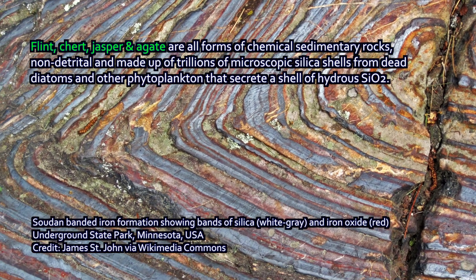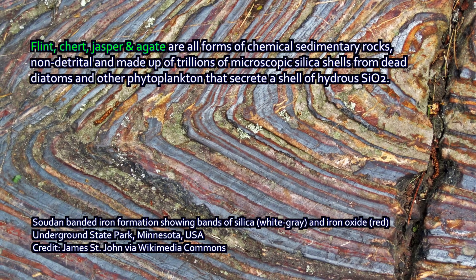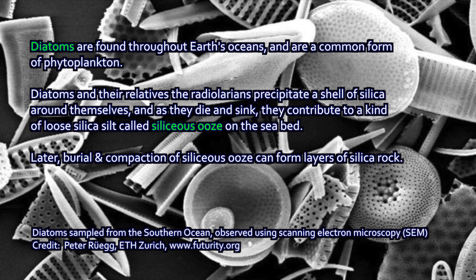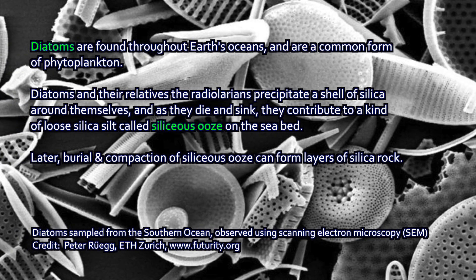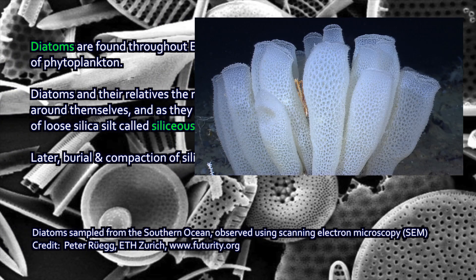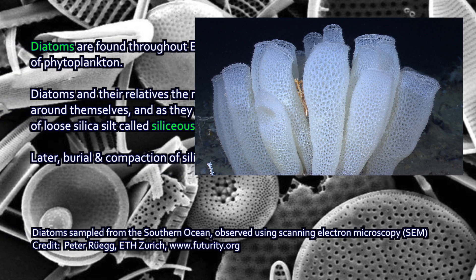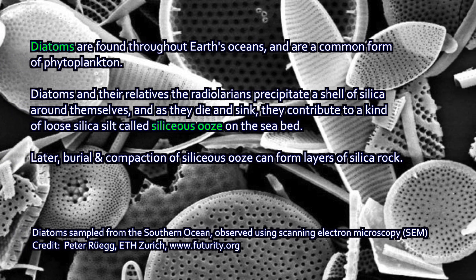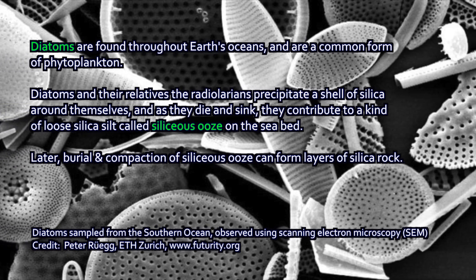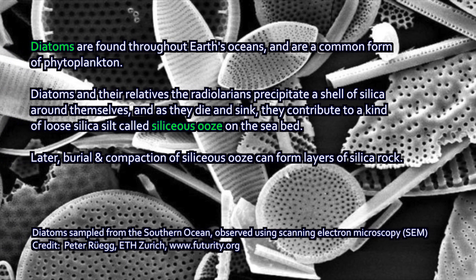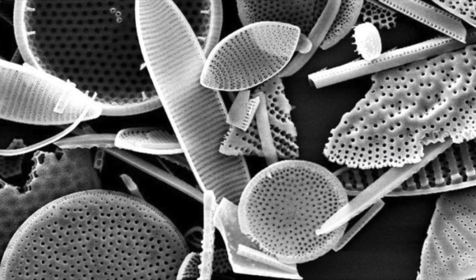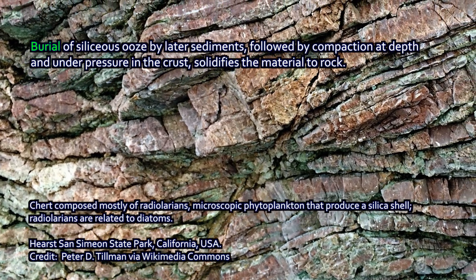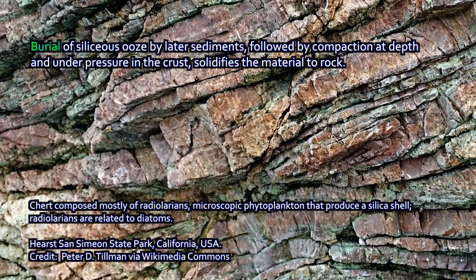The microscopic shells of single-celled and otherwise microscopic organisms — plankton such as diatoms — who in life weave around themselves a shell of silica. Glass sponges do basically the same thing. As time rolls on, the dead remains of diatoms fall to the bottom of the ocean and collect as a deposit of siliceous ooze. Eventually that gets buried, compacted, water is driven out, and it hardens into solid rock.